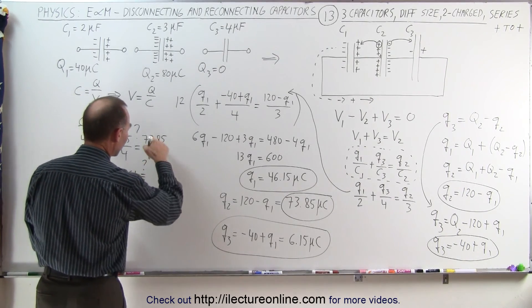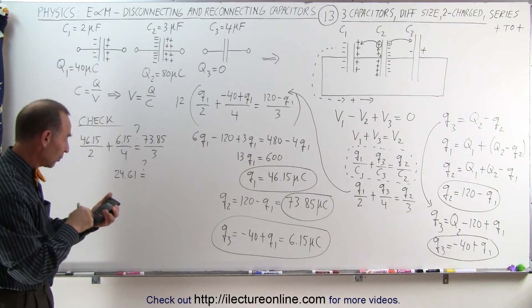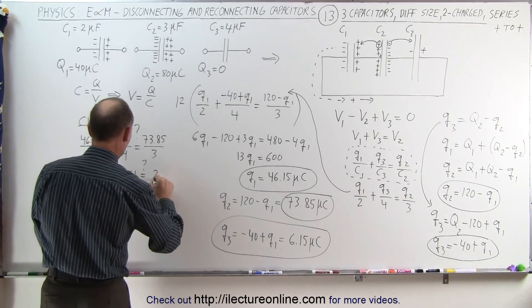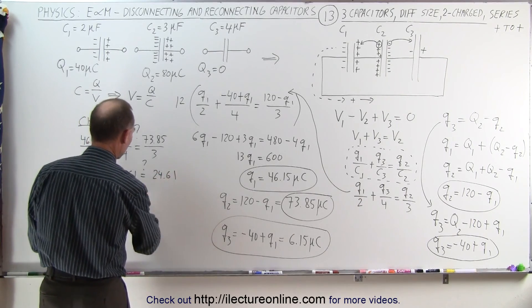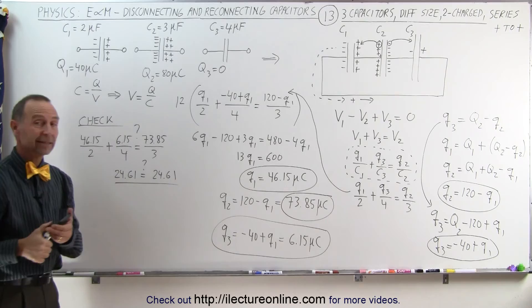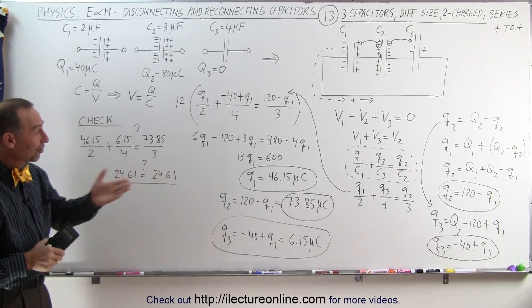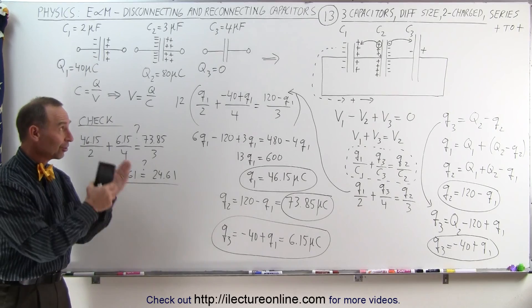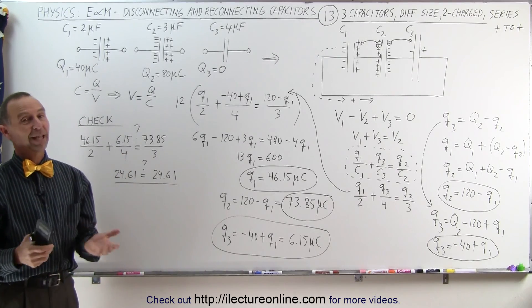And so the question is, are they equal to that? 73.85 divided by 3 equals, and I get 24.61. And sure enough, it came out. The answers appear to be correct. Those are the final charges on the three capacitors when they're hooked up like this. And that's how it's done.